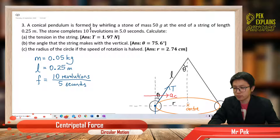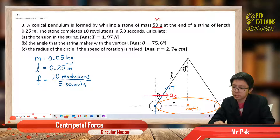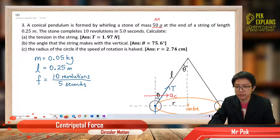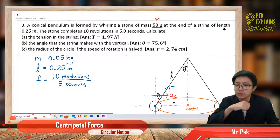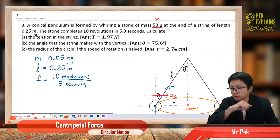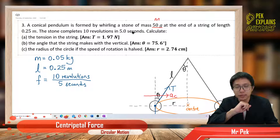A conical pendulum is formed by whirling a stone of mass 50 grams. We have the mass here, but it's in grams — you will have to change to kilograms, the SI unit. At the end of a string of length 0.25 meter. The stone completes 10 revolutions in 5 seconds. You can get revolutions per second, RPS.